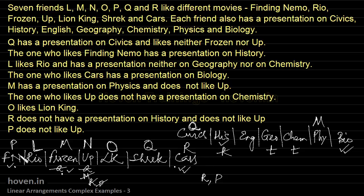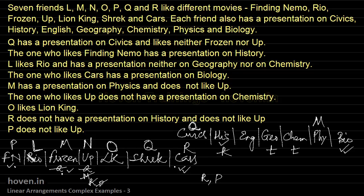Now we allocate subjects to persons. FN is paired with History, and P is at FN, so P is allocated to History. Cars is paired with Bio, and R is at Cars, so R is allocated to Bio.